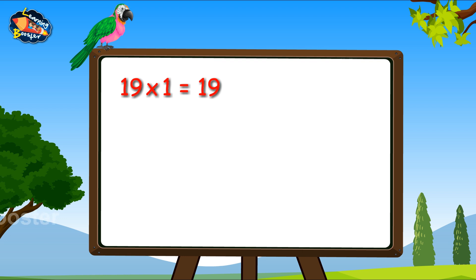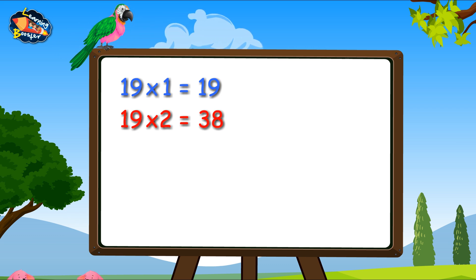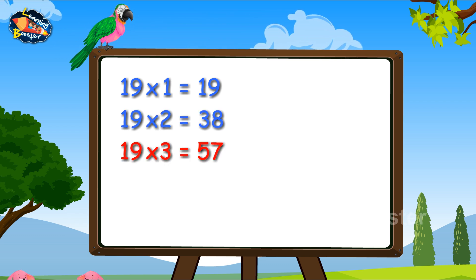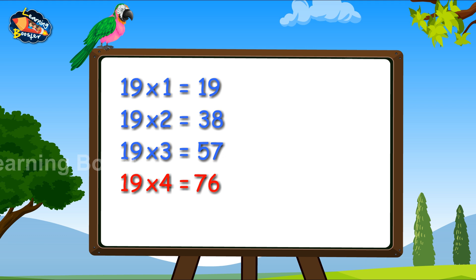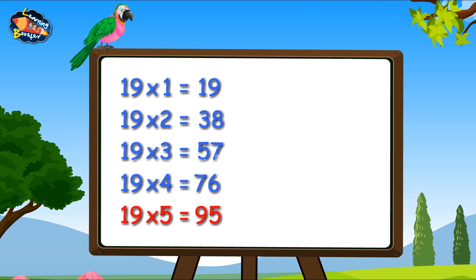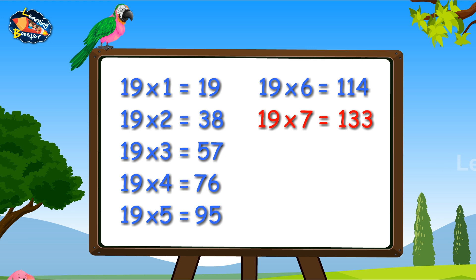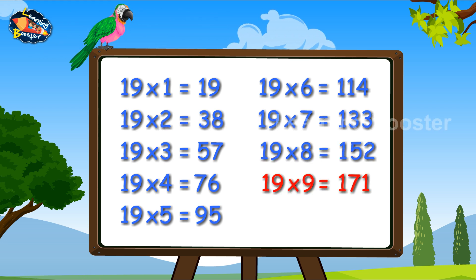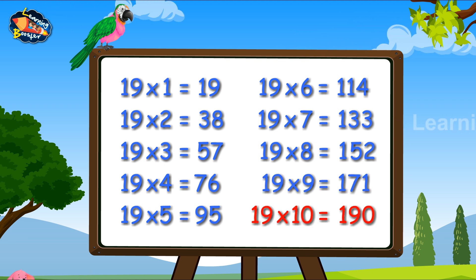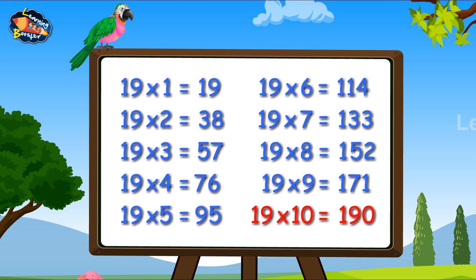19-1s are 19. 19-2s are 38. 19-3s are 57. 19-4s are 76. 19-5s are 95. 19-6s are 114. 19-7s are 133. 19-8s are 152. 19-9s are 171. 19-10s are 190.